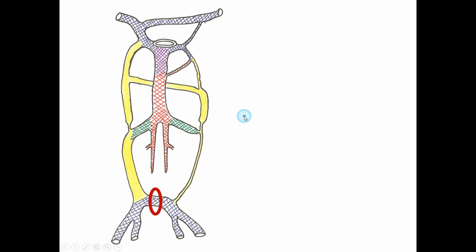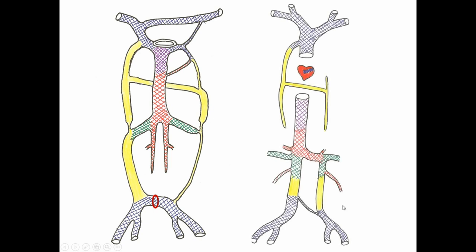Last but not least, if the iliac anastomosis between the posterior cardinal veins fails to form properly, the left lower limb needs an alternative drainage route. The left side of the supracardinal vein stays open, resulting in a duplicated inferior vena cava — one on the left draining into the renal vein and one on the right in its more or less normal position. They join at the point where the left renal vein meets the inferior vena cava, and there may occasionally be a small connection marking the site of the iliac anastomosis.